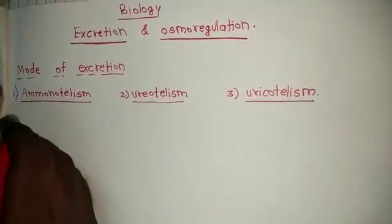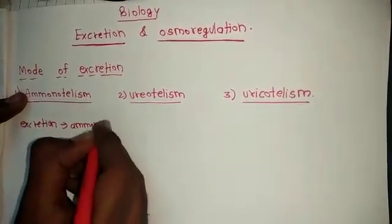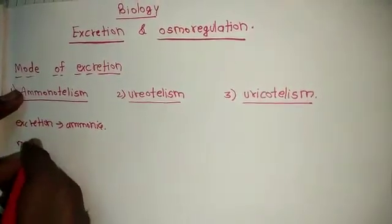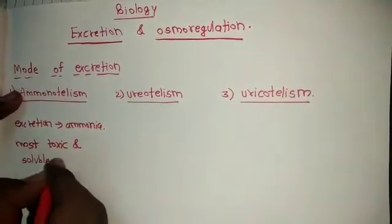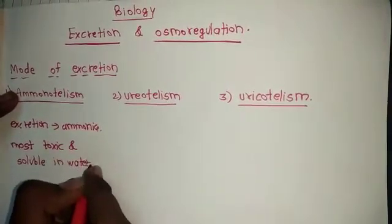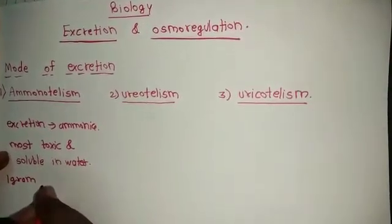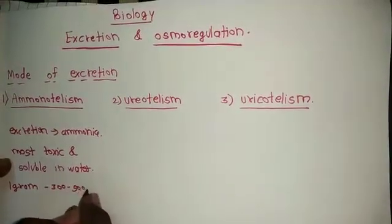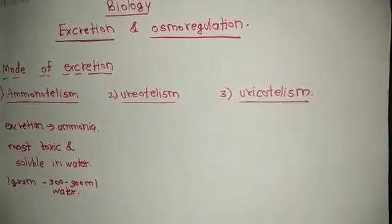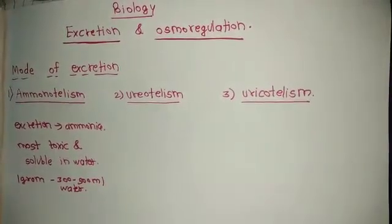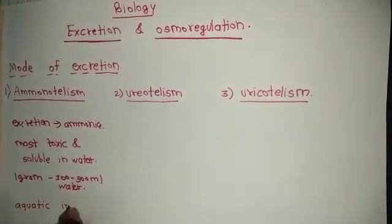Ammonotelism means excretion in the form of ammonia. Ammonia is very toxic and soluble in water. 1 gram of ammonia is eliminated by 300–500 ml of water. Ammonotelism animals are mainly aquatic invertebrates.